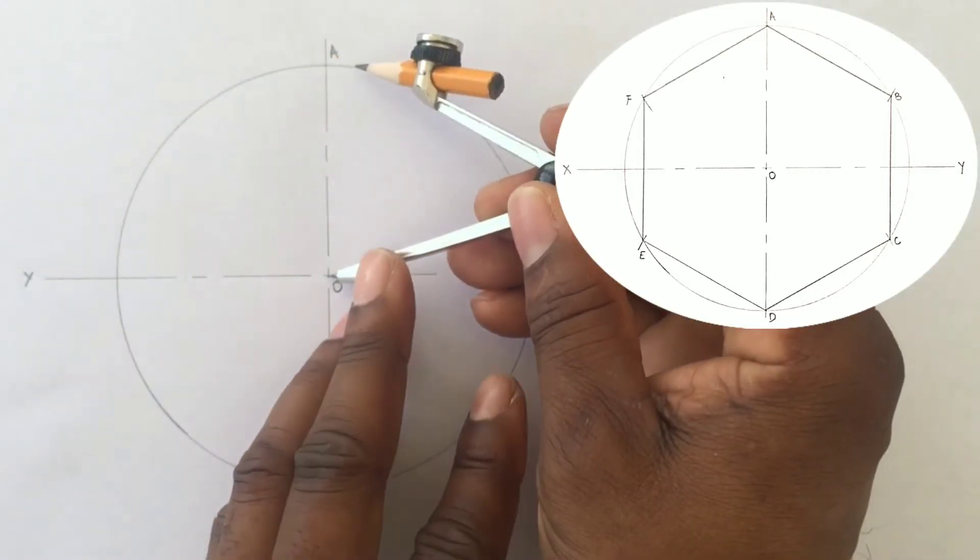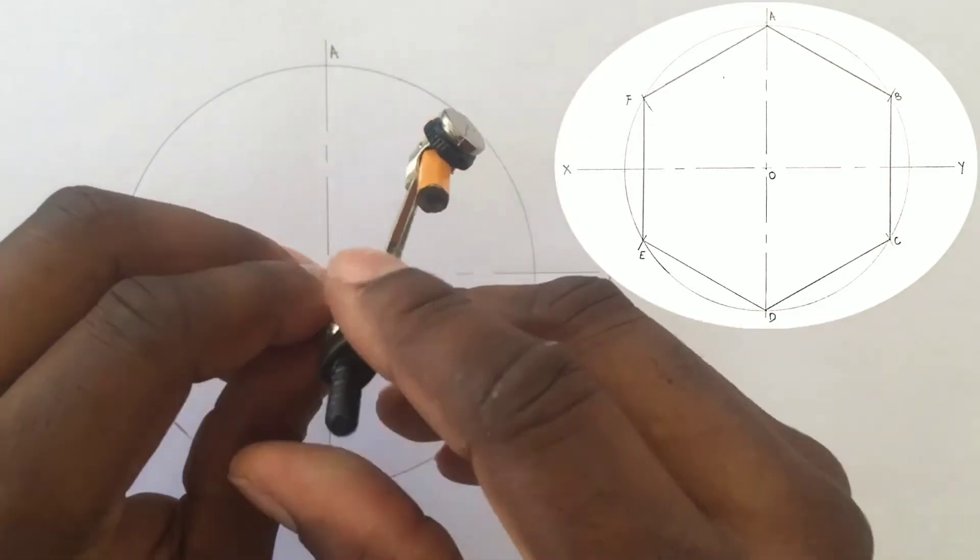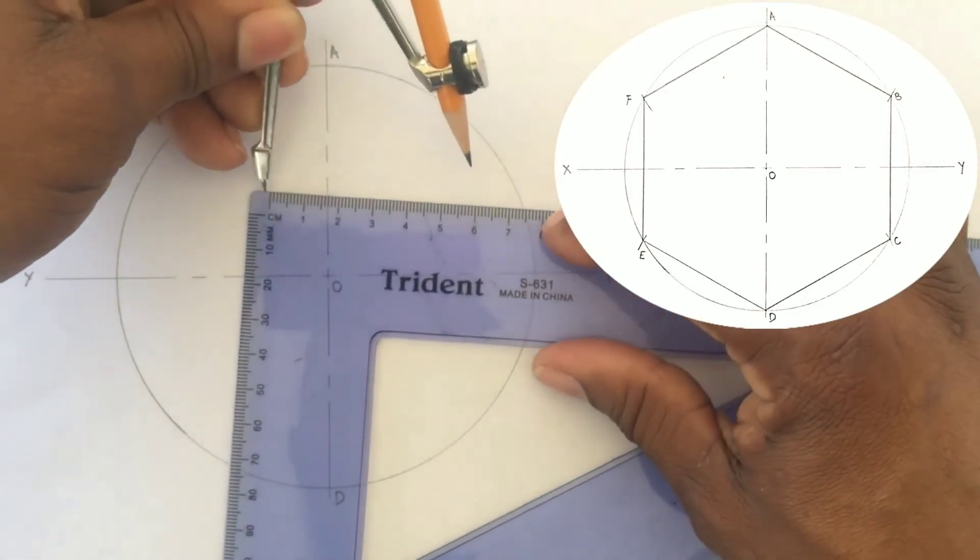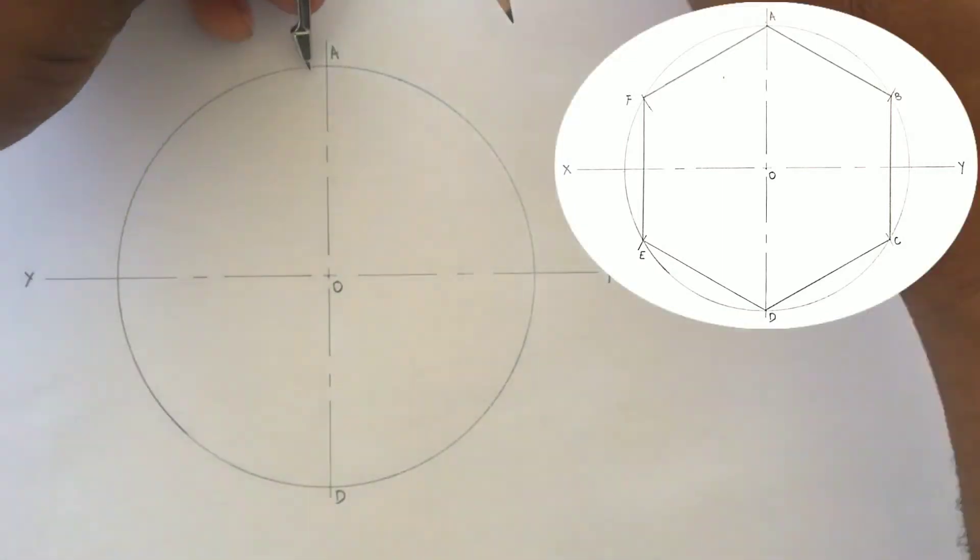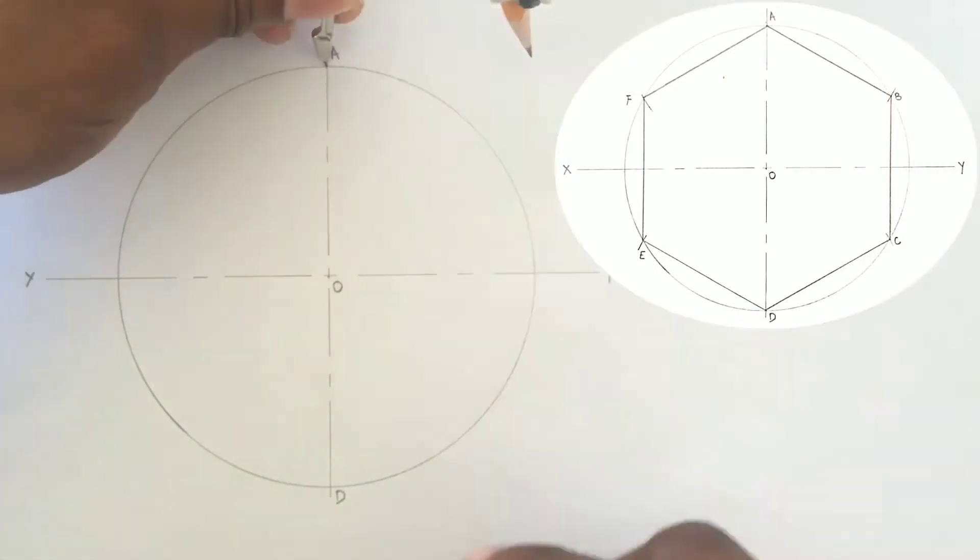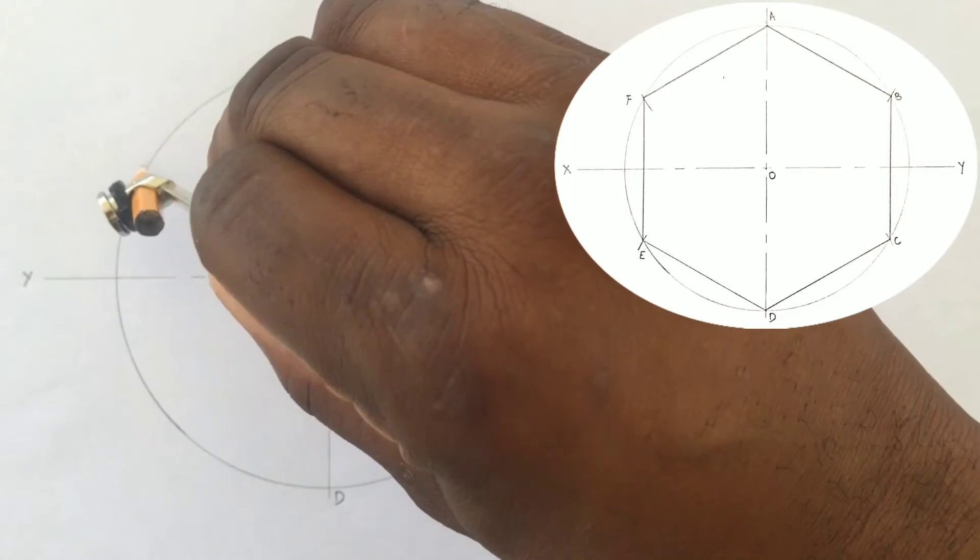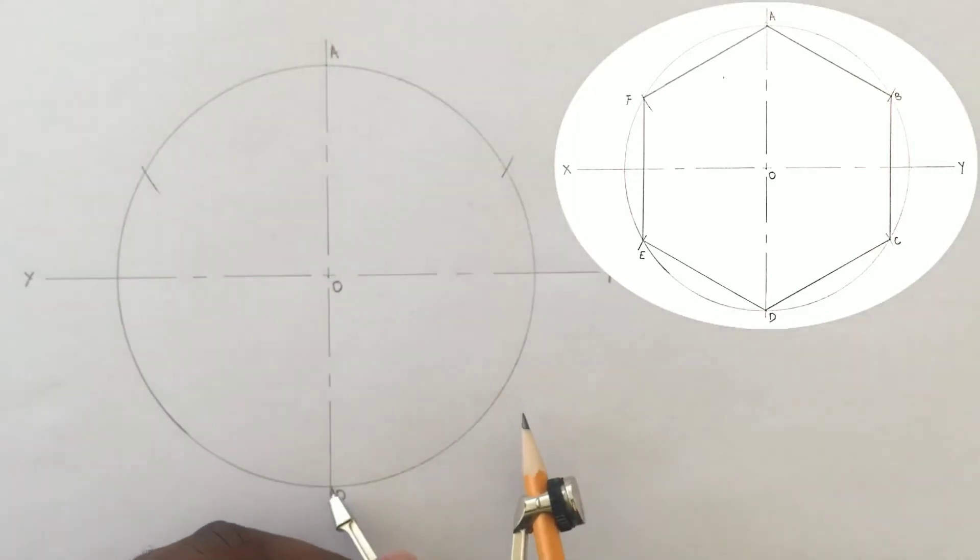we will place our compass at point A and we will describe arcs that will intersect the circle to the left and to the right. We will do the same from point D.